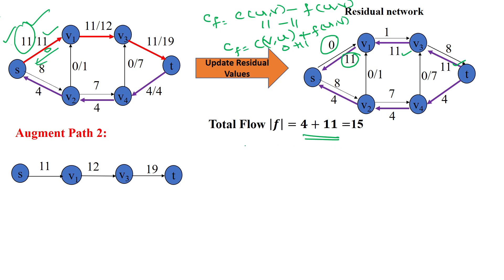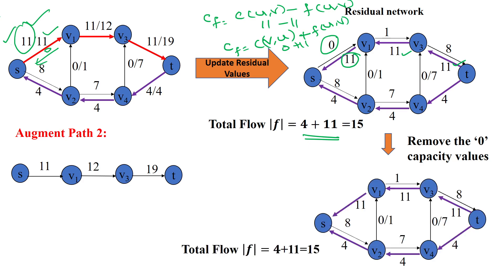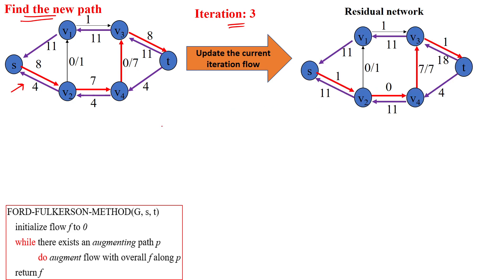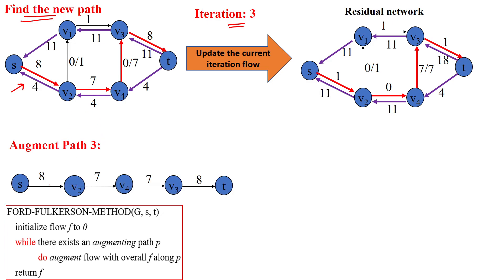From the previous iteration's result, we remove edges with 0 capacity from the residual graph. After removing those zero-capacity edges, we identify the new path for iteration 3: S to V2, V2 to V4, V4 to V3, V3 to T. The flow values along this path are 8, 7, 7, and 8. We identify the minimum of these values: minimum of 8, 7, 7, 8 equals 7.